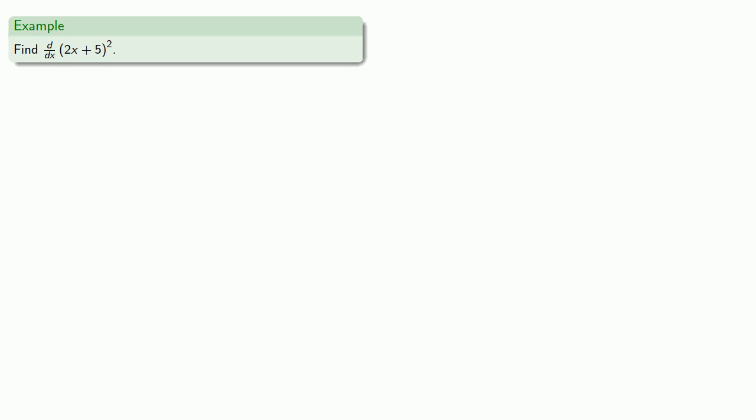So for example, how about the derivative of 2x plus 5 squared? That's a function of a function, that's a square of a thing. So if we had to differentiate this and didn't know any other options we could expand.